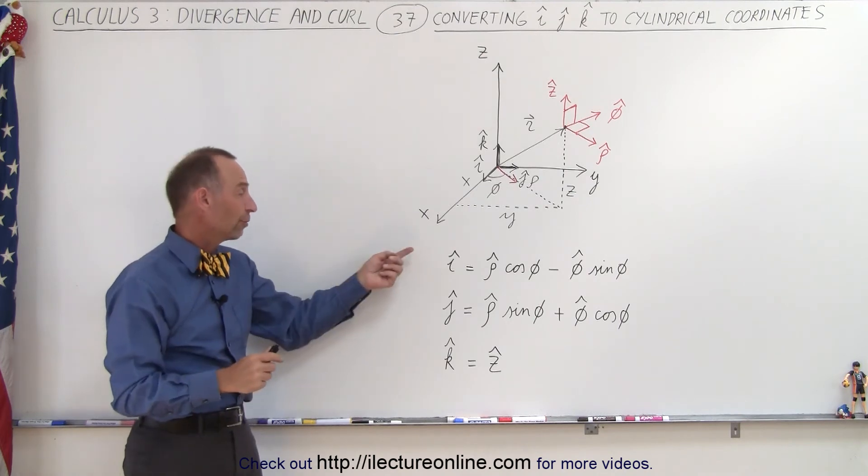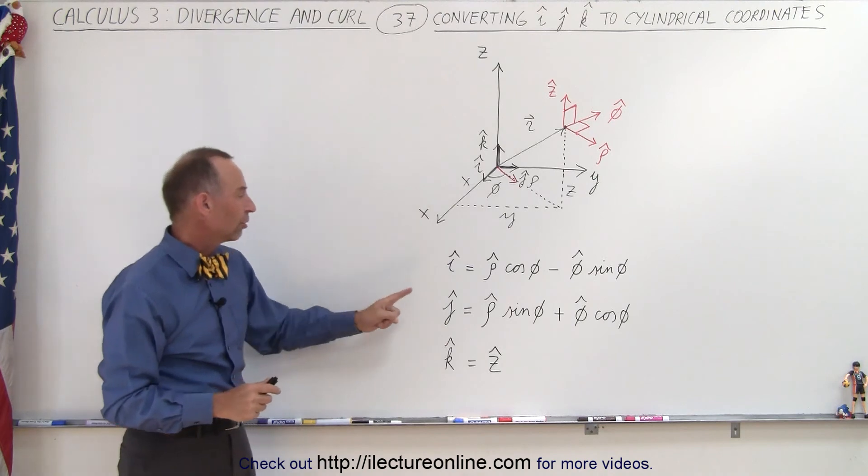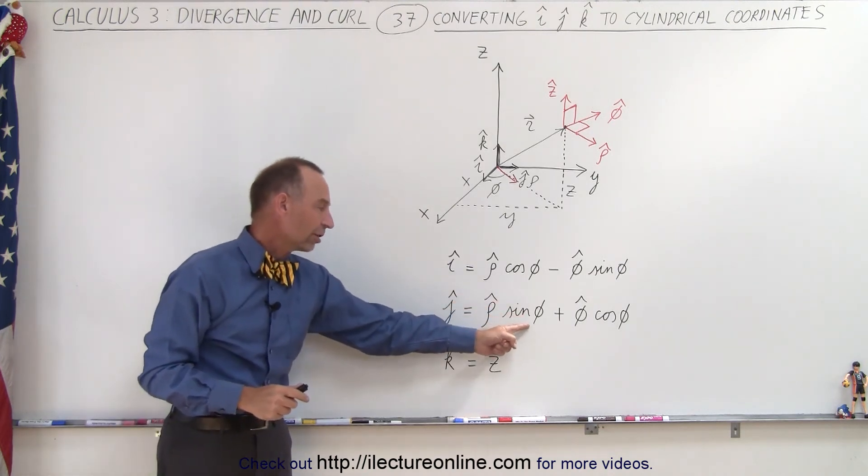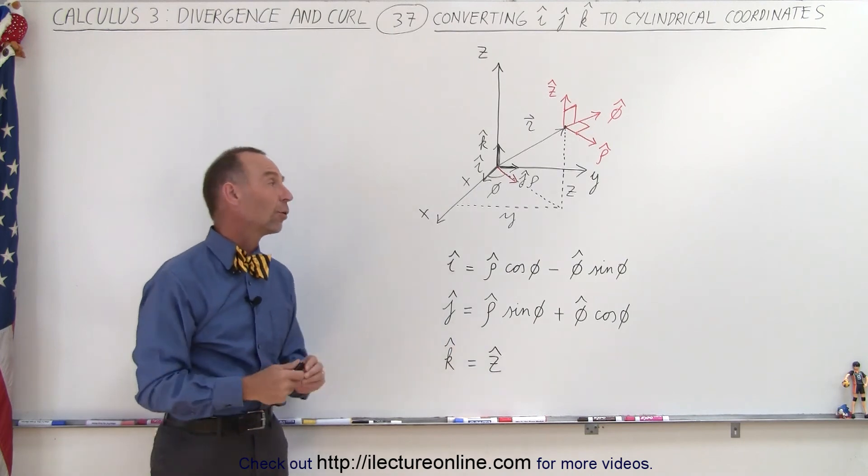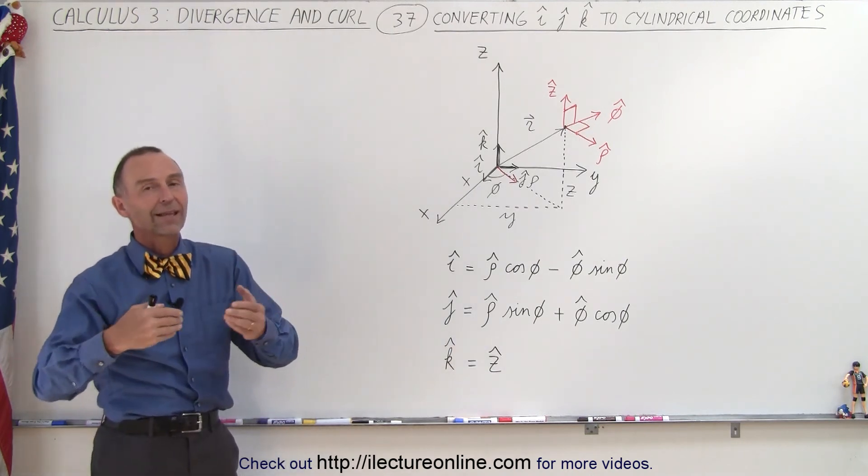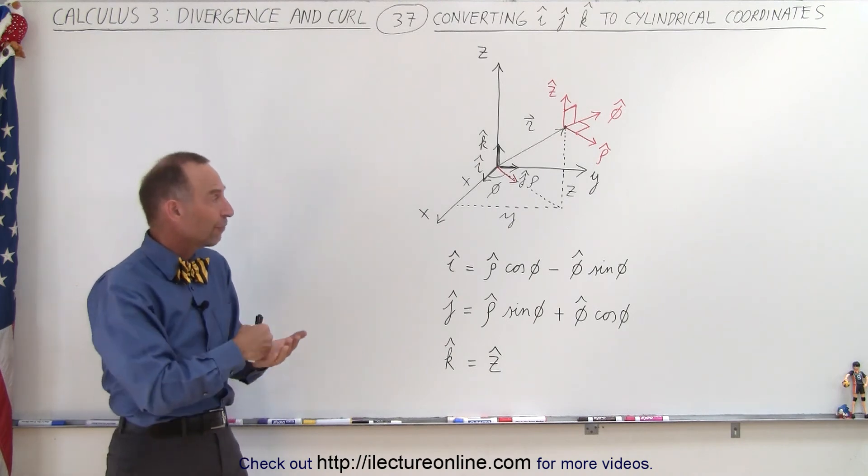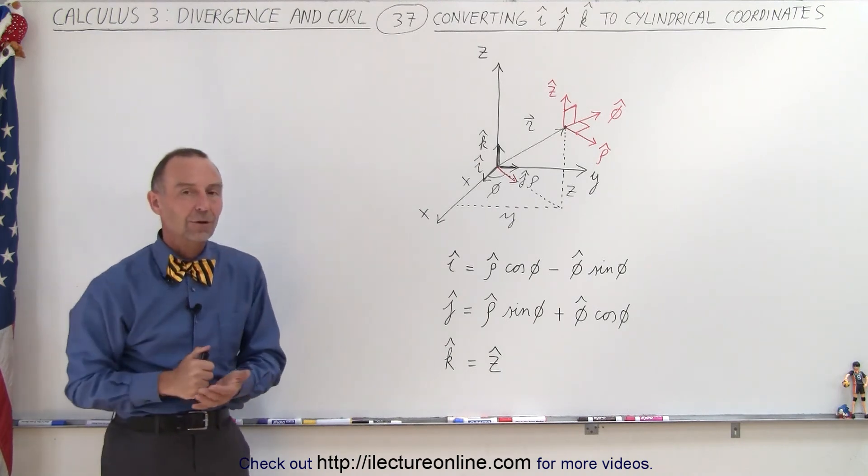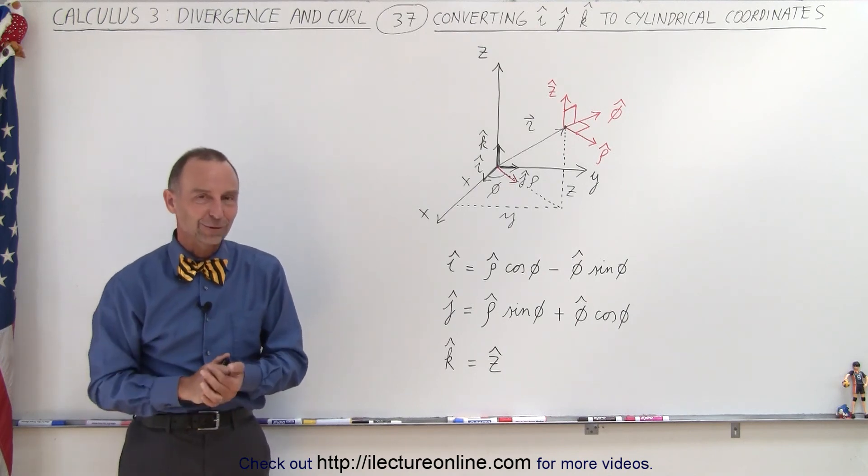So that's how we can convert from i to the unit vectors in cylindrical coordinates, from j to the unit vectors in cylindrical coordinates, and from k into the unit vector in cylindrical coordinates. Once we know how to do that, now we can start calculating the divergence and the curl in cylindrical coordinates. So stay tuned, and we'll show you some examples of that in the next videos.